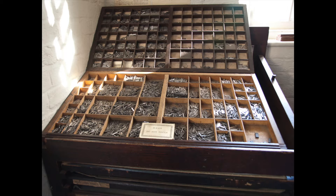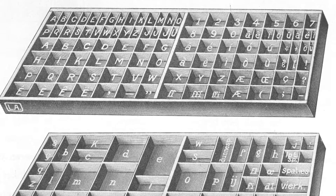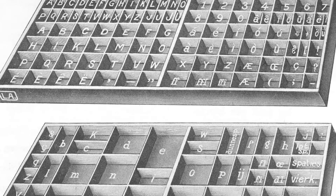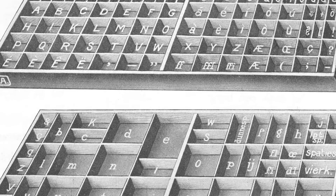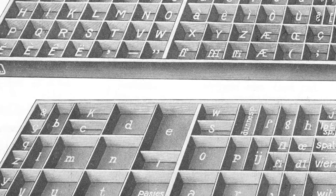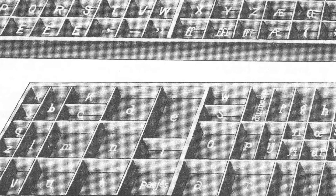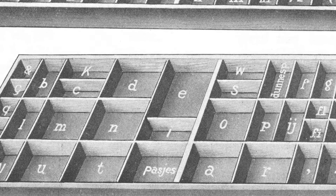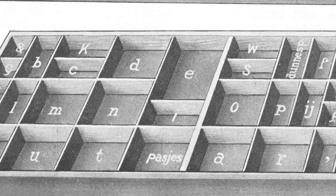The metal sorts were organized in compartmentalized cases that held minuscule characters in the lower case, and majuscule or capital letters in the upper case — terms which have entered into our common parlance today. The lower case organized the most commonly used letters into the largest compartments in the central area of the case. Note the large space allowed for the lower case e. The double case format allowed space for accented characters, as well as ligatures, for example, the conjoined fi, and diphthongs, or the conjoined ae or oe.